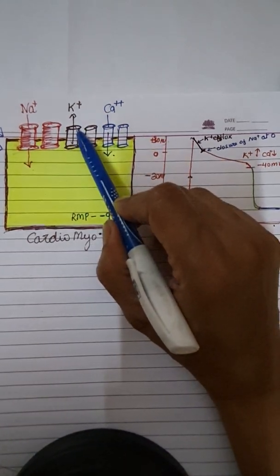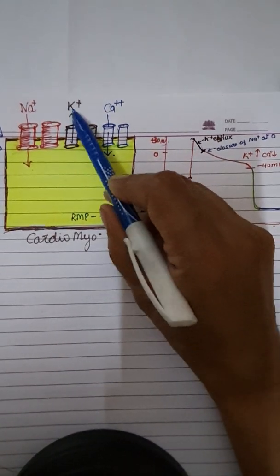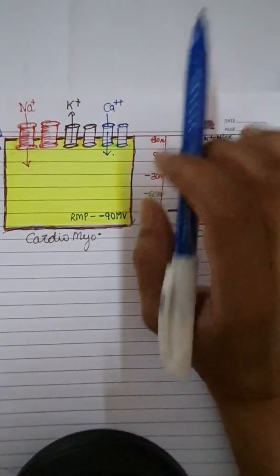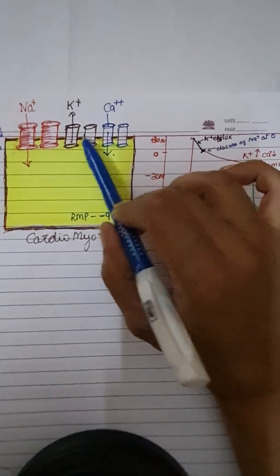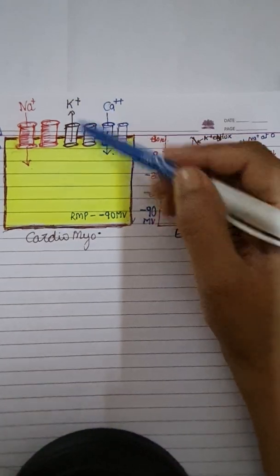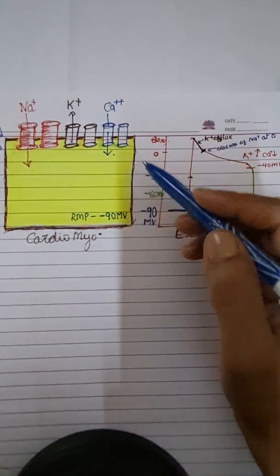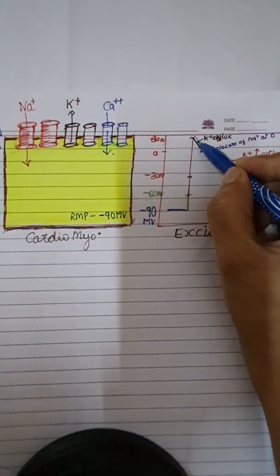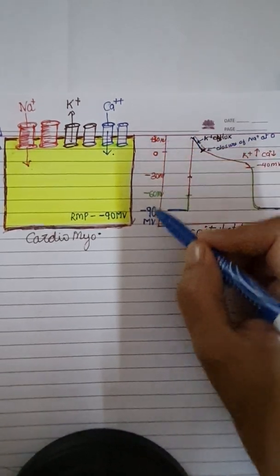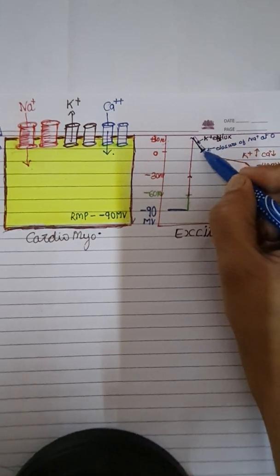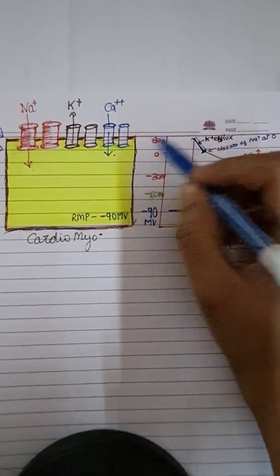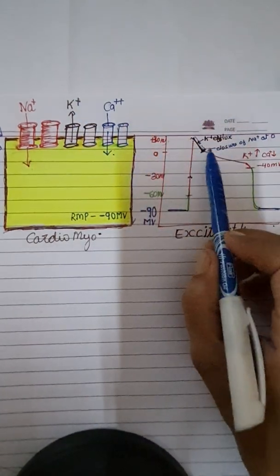Efflux of potassium ions occurs. For a brief time, the cell starts losing cations and positive ions move out. The cell starts coming toward negativity from positivity. This short brief period is because of the efflux of potassium ion from the cell.